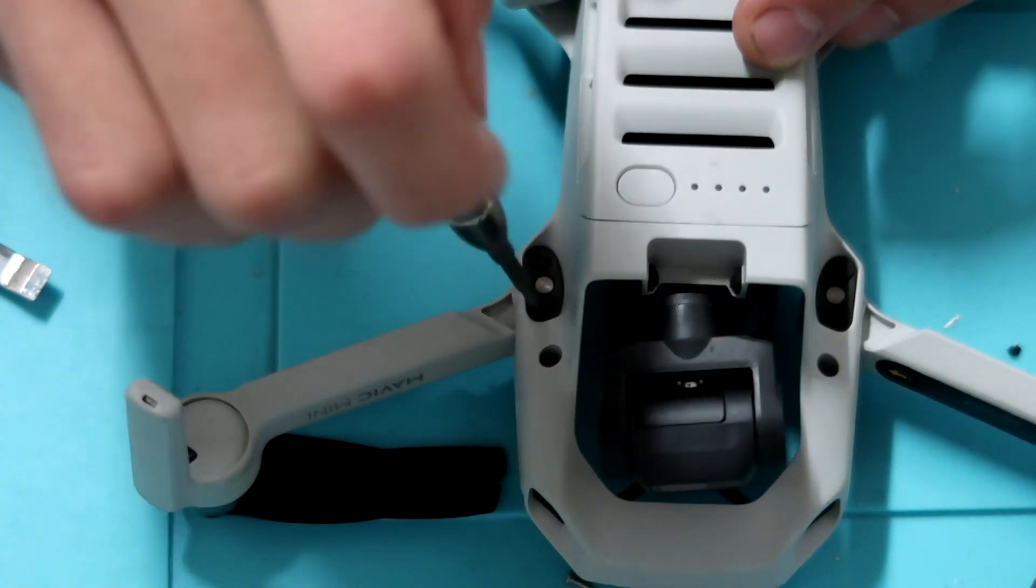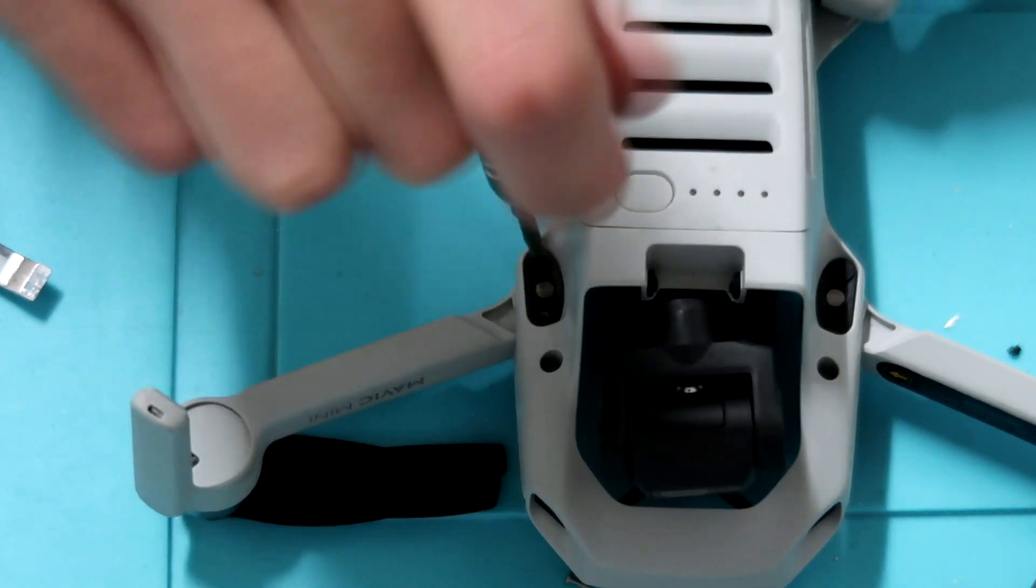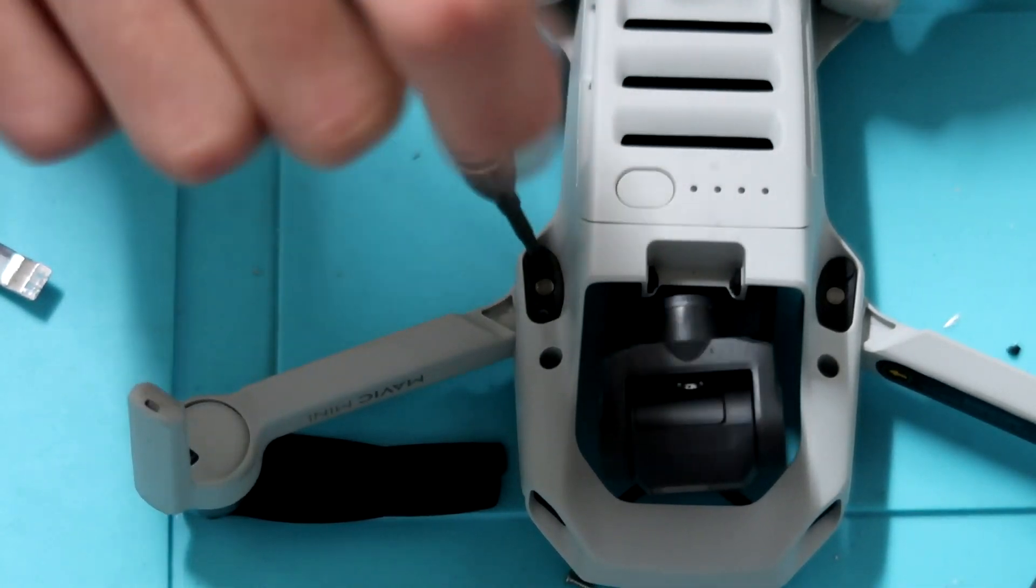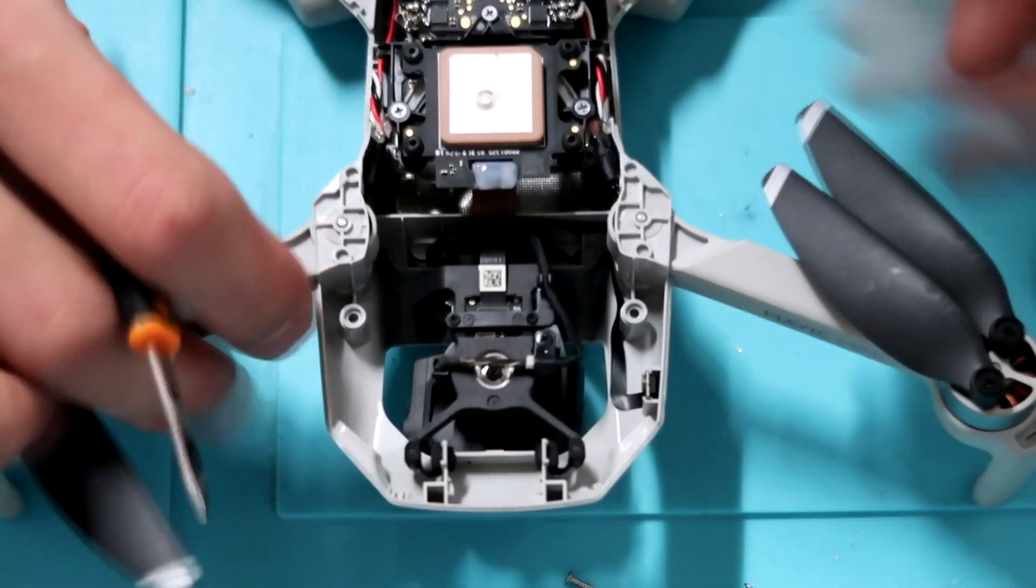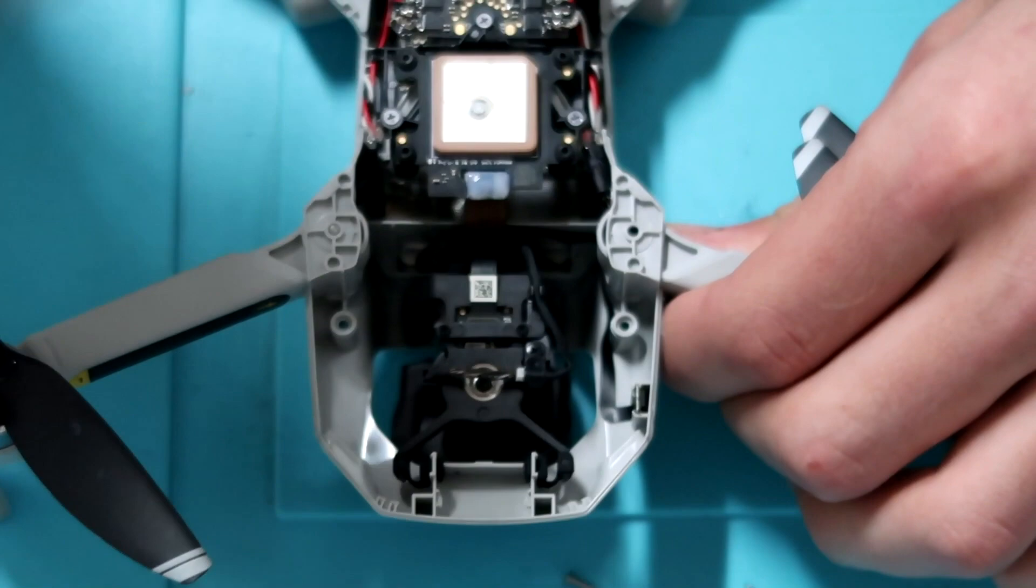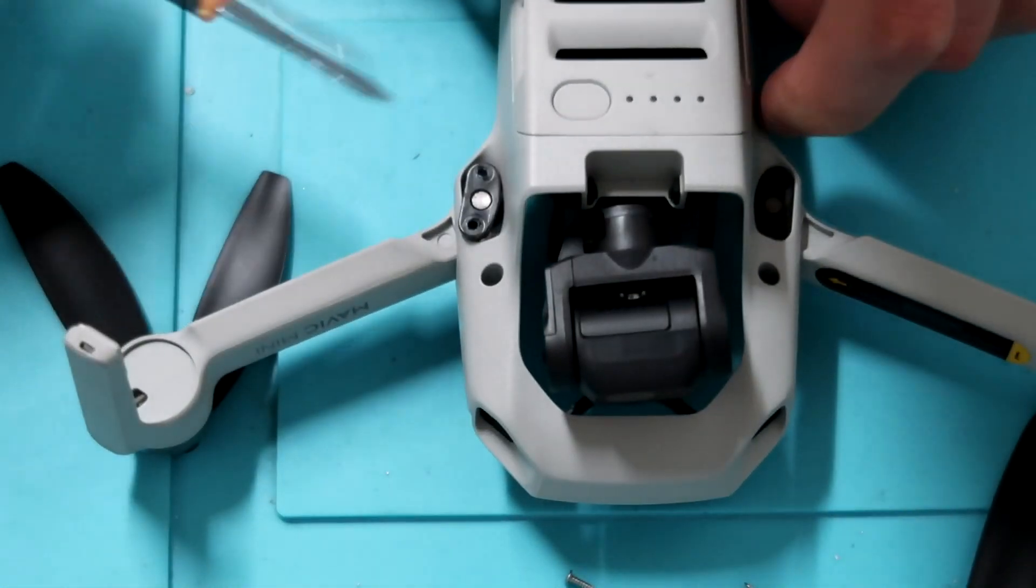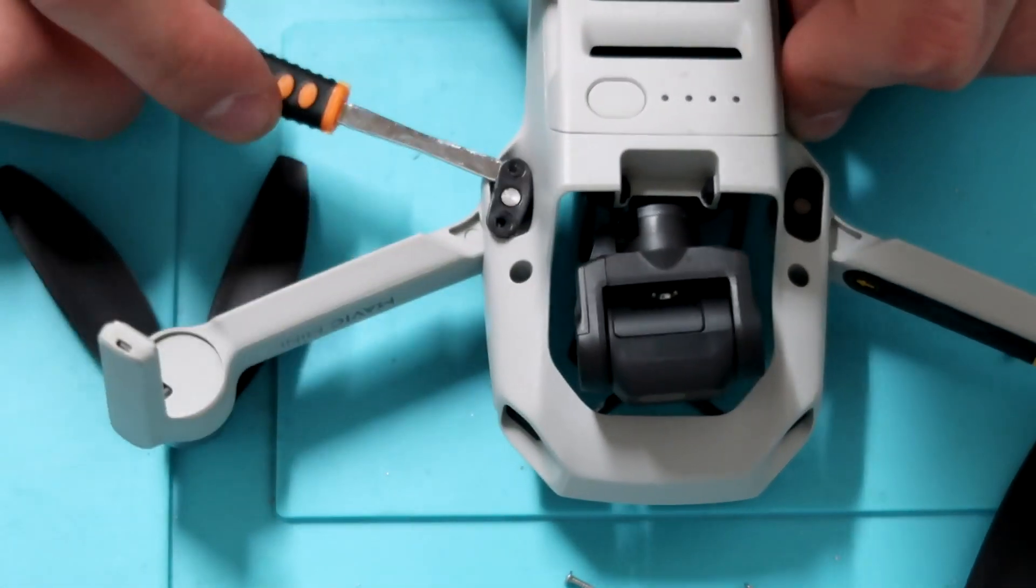These are two Phillips head screws. Go ahead and remove both of those. Once you have them removed, I'm going to show you a trick on how to get underneath the arm bracket and pry it out of the frame. Once you have the screws out, flip the drone over. You'll see right where the arm bracket is a tiny little silver dot. That's the top of the arm bracket. Just push that down a little bit and you'll be able to have some room to pry underneath the arm bracket and get it out of the drone.